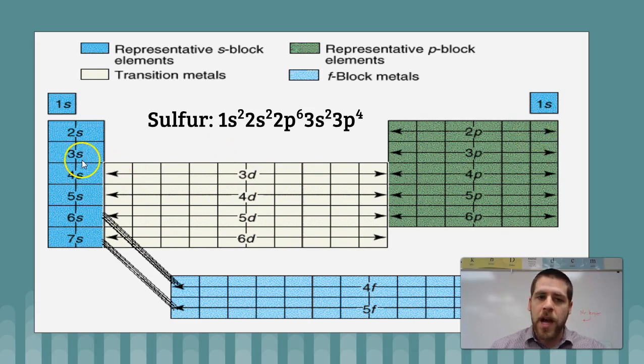After the 2p, you get to the 3s, and then you get to the 3p, and there's four to get to sulfur, which is right here, four electrons in the 3p sub-level, and so it's 3p4.